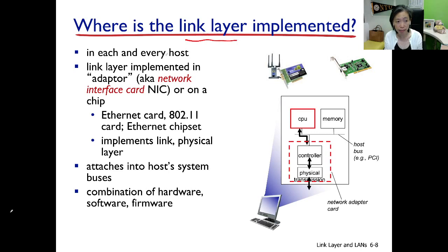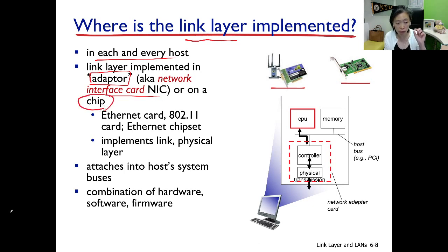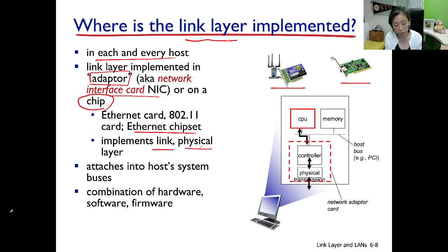Where is the link layer implemented? It is in each and every host, specifically at the network adapter. These network adapters used to be large, looking almost like a graphics card, and are also called network interface cards or NICs. Nowadays they are very small chipsets on the motherboard — that's why your motherboard spec might list an Ethernet chipset or a Wi-Fi chipset. These network adapters are where the link layer and physical layer protocols are implemented, and they are attached to a host through the system buses.